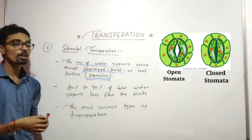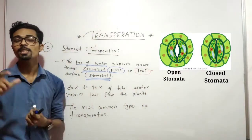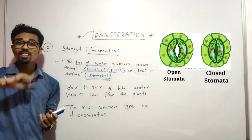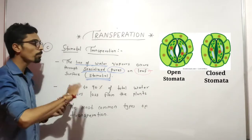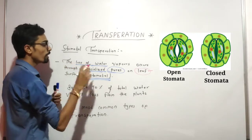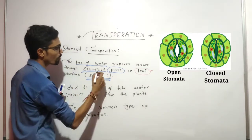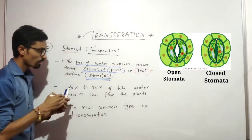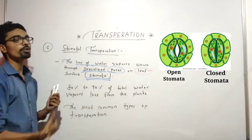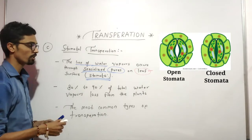There is a series of specialized pores on the leaf part. These specialized pores are found on the leaf surface, and that part is basically where stomata are settled. Transpiration of water occurs here. You can say that 80 to 90% of water loss occurs through stomatal transpiration from the plant.